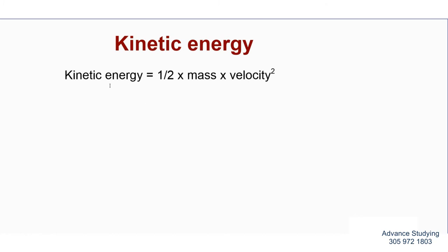Kinetic energy equals half times the mass times velocity squared. Let's shorten this equation so we can work with the variables. This is what I get when I shorten the equation: kinetic energy equals half times the mass times the velocity.